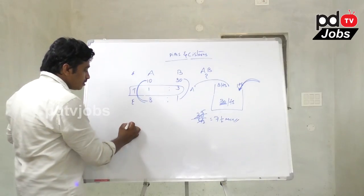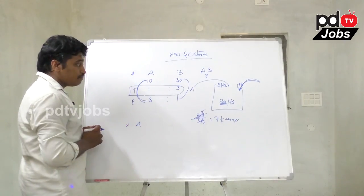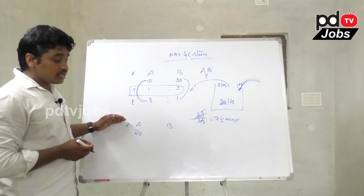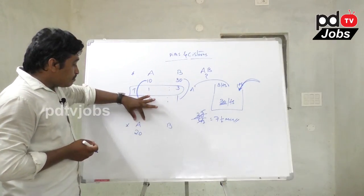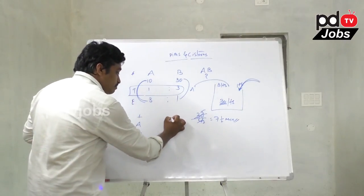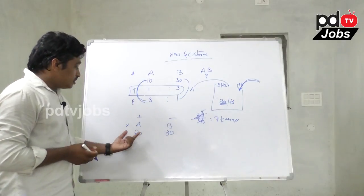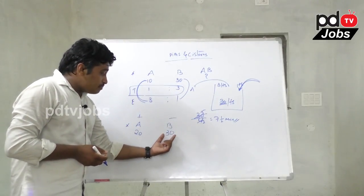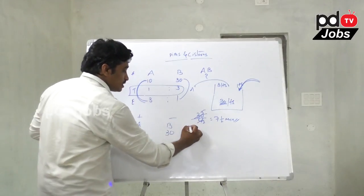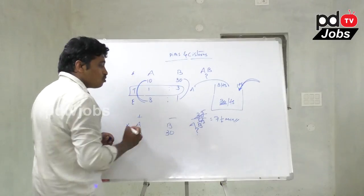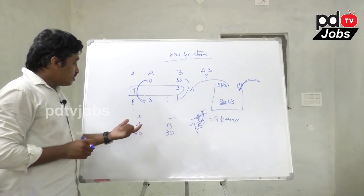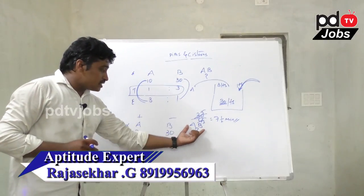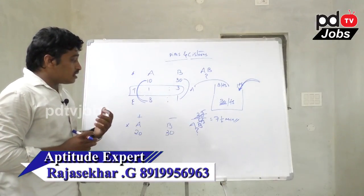Next example. Pipe A can fill a tank in 20 minutes and pipe B can empty it in 30 minutes. This is the filling and emptying concept. If they work simultaneously, how much time will it take to fill the total tank?